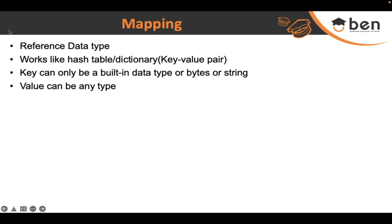Mapping is a very useful data type. When you write smart contracts you will understand its importance — it will naturally click that you are maintaining some important information and you need to retrieve it in other functions. One function creates the data and you want to retrieve it in another function using a mapping data type.